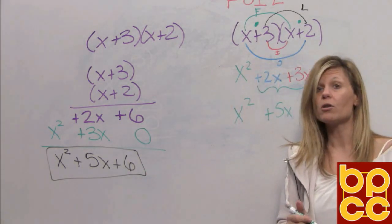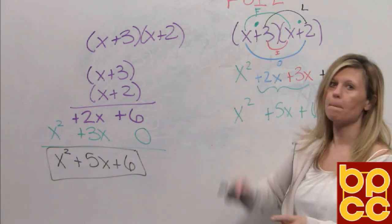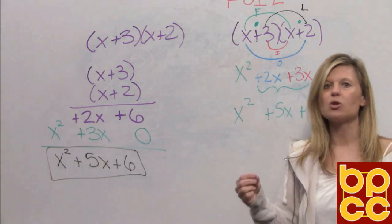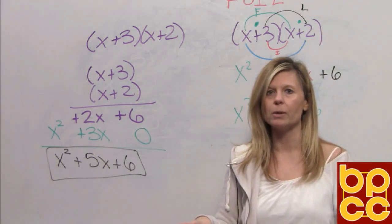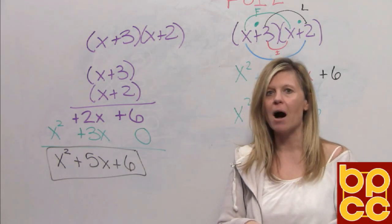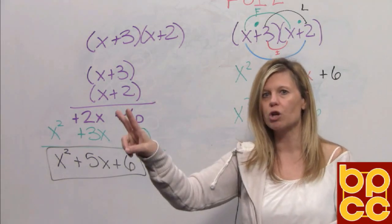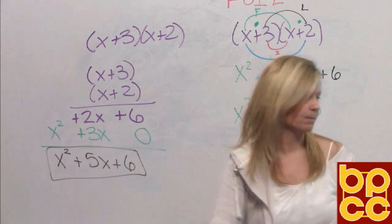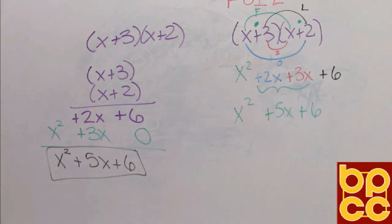So what's important to understand is this FOIL method can only be used with two binomials. Cannot be used with trinomials. And it's not for monomials. It's multiplying two terms times two terms. So in today's last module, we learned some tricks for multiplying just binomials. You will see these tricks throughout the rest of this semester. Have a great day.